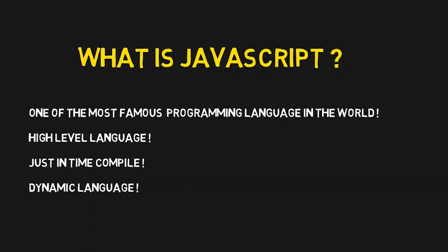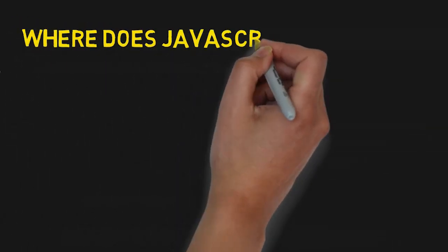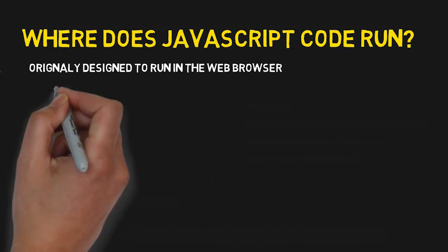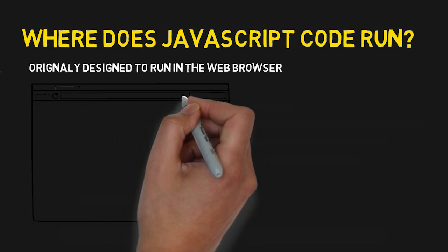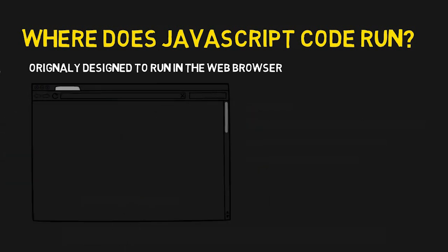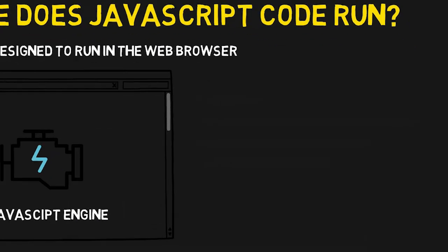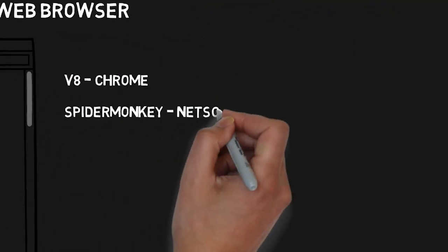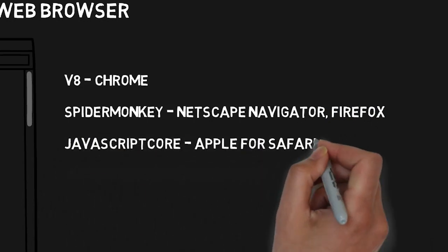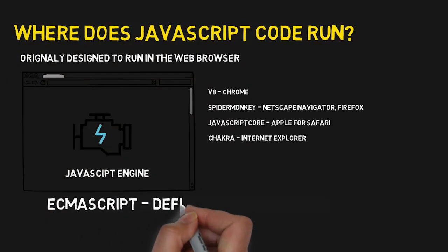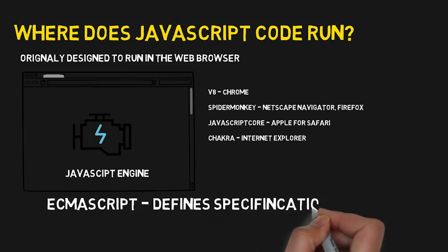Where does JavaScript code actually run? JavaScript was originally designed to run in a browser. Every browser supports a built-in JavaScript engine, which is responsible for executing JavaScript code. Some of the most famous engines are: Chrome uses V8, Mozilla uses SpiderMonkey, and Internet Explorer uses Chakra. All of these engines conform to a single standardization called ECMAScript, which is a specification defining the standard for the code.